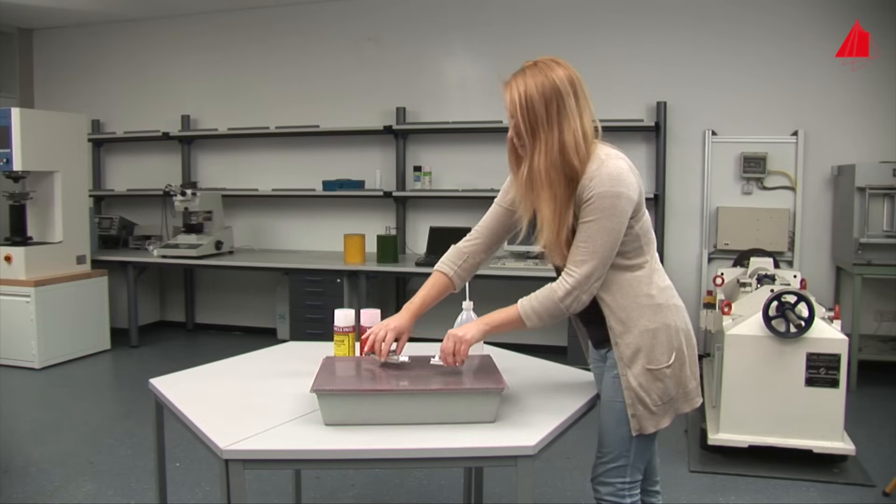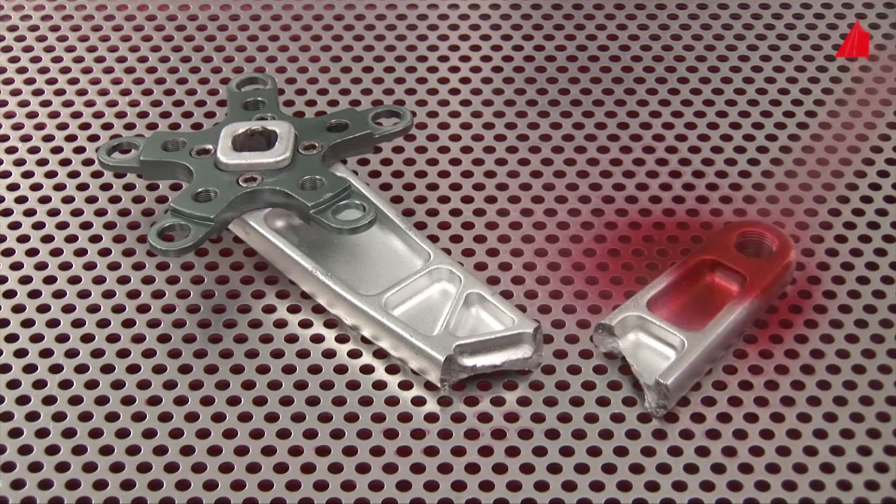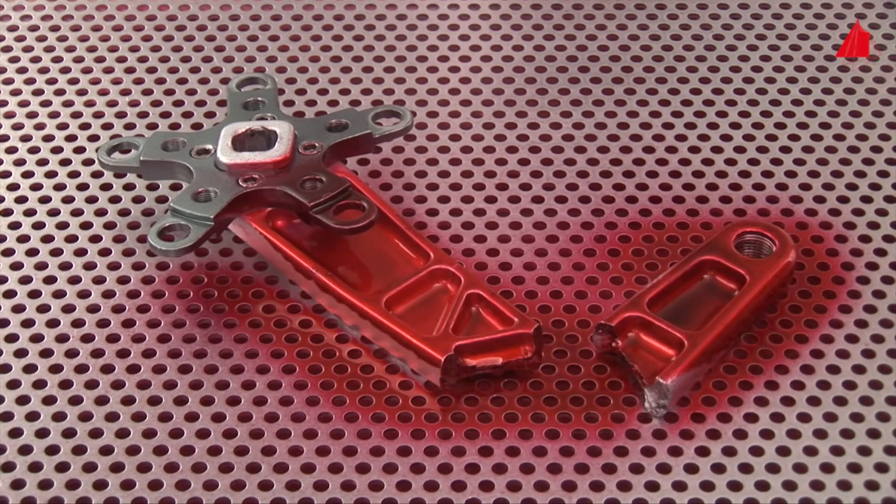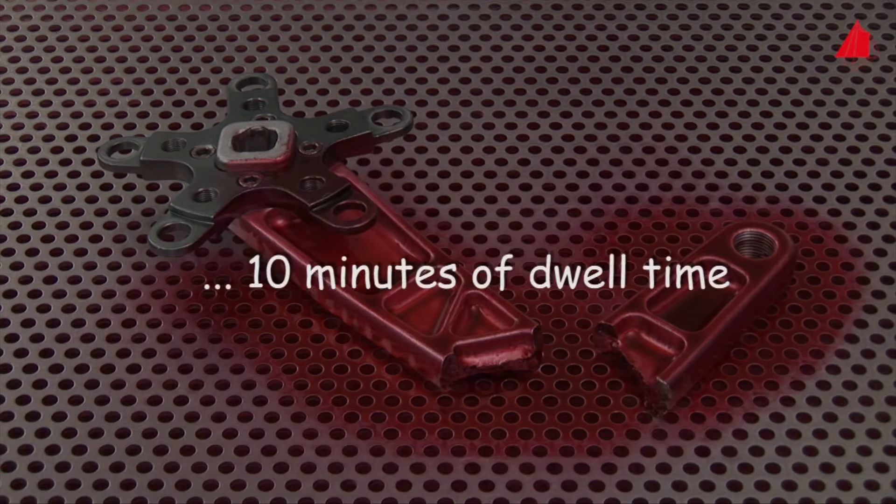Next, the broken bicycle crank arm has to undergo the dye penetration test. Spraying with penetrant, allowing to soak.